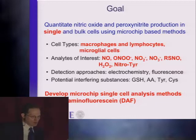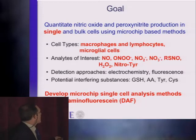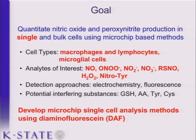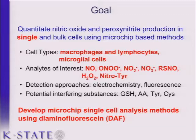Overall, we want to find a way to quantitate nitric oxide and peroxynitrite production at both the single cell level and bulk cells using microchip-based methods. We're going to be using two different types of immune cells — macrophages and lymphocytes — and eventually we'd like to work with microglial cells. We're interested in electrochemically active reactive nitrogen species. We'll start by developing the single cell methods using fluorescent detection of nitric oxide in cells, and eventually move from fluorescence methods to electrochemical methods on these microfluidic devices.